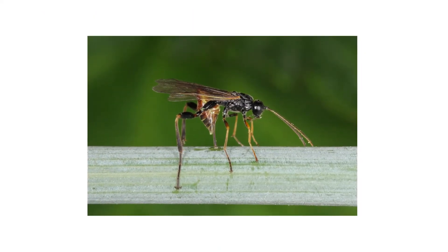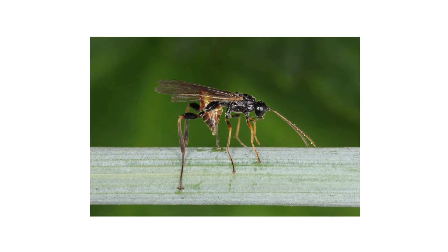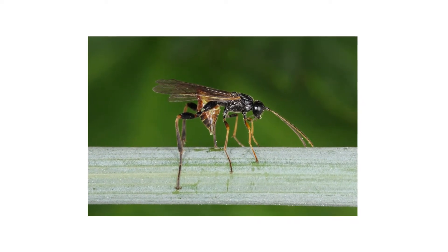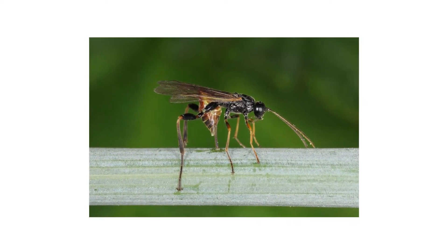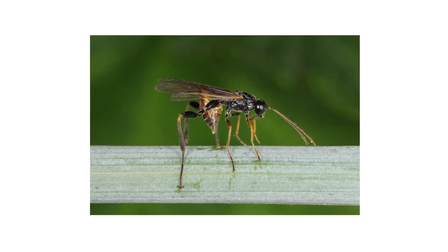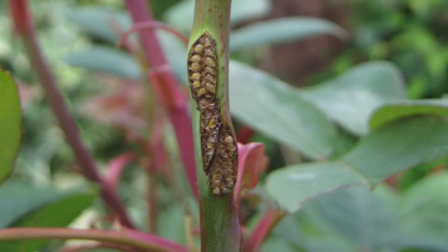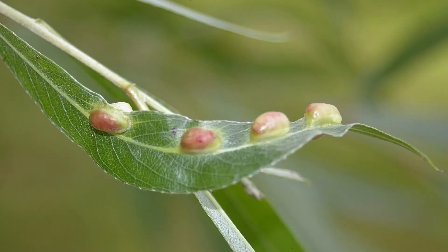Adult sawflies typically emerge from spring to summer, but they can be difficult to spot since they only live for about one week as they mate and lay eggs. The presence of dead sawflies around your property can indicate future pest activity for the next season. If you time your inspection before larvae hatch, you can spot eggs laid into the stems of some plants. Some species lay their eggs in the leaves of their hosts, forming galls or round growths.